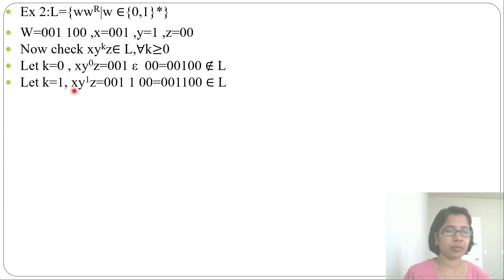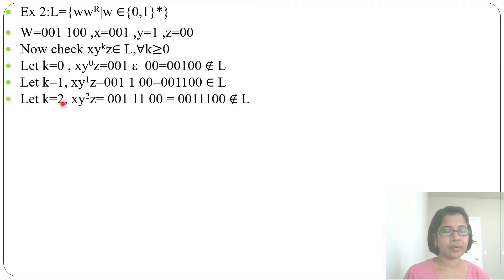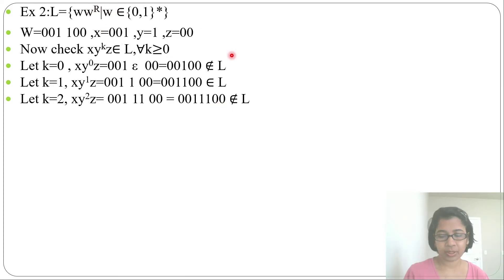For k = 1: x·y^1·z = 001·1·00 = 001100, which is ww-reverse — so it belongs to L. For k = 2: x·y^2·z = 001·11·00 = 0011100 (three 1s), which cannot be written as ww-reverse, so it does not belong to the language. Since k = 0 and k = 2 both give strings not in the language, this is not regular.